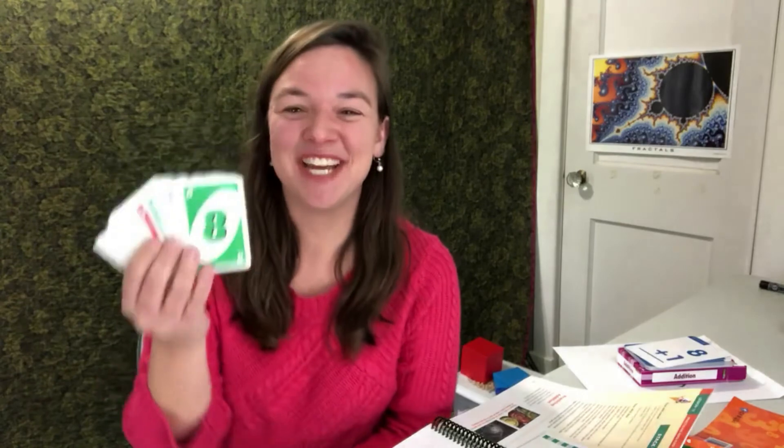Another variation with these uno cards is a game that I call Spill and Find. And it's code for, mommy doesn't have a lot of time, but we need to practice. So, what you do, is you take a bunch of numbered cards, and you, the mom, you spill them all over the table. Or the homeschool parent, whoever's doing this. You spill it all over the table, and you set a timer.